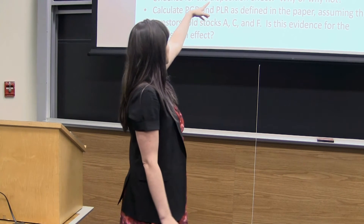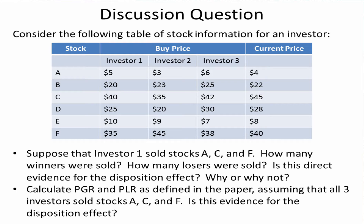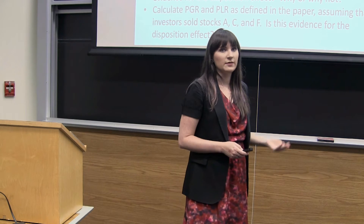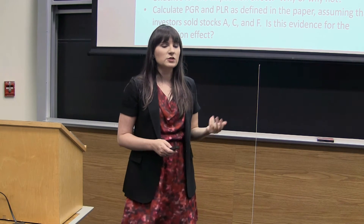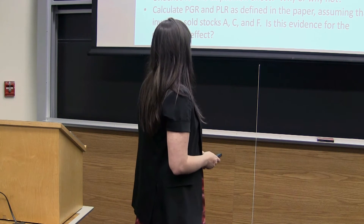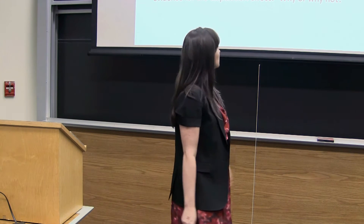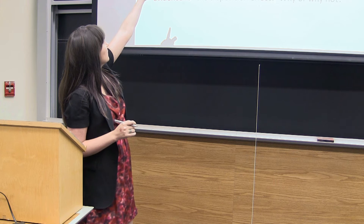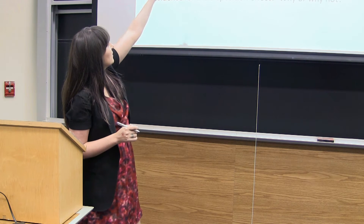I gave you three different investors, and obviously there's only one current stock price — if I'm Microsoft, I only have one price. But the buy prices for each investor can differ depending on when they bought the stock. So the first question: suppose investor one sold stocks A, C, and F. How many winners were sold? Let's categorize each one. Stock A: bought at 5, now at 4 — that's a loser.